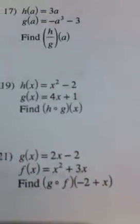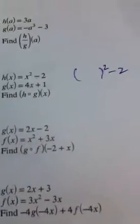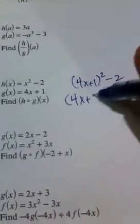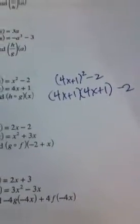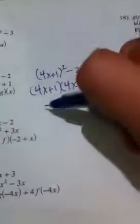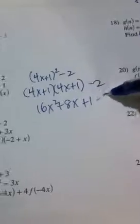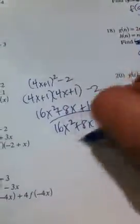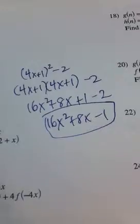The only other thing you might see is like number 19, H of G of X. My H function is X squared minus 2. So it's 4X plus 1 squared, the whole thing squared, quantity squared, which means you have to do FOIL. I'm going to cut this short because I'm running out of time. So your final answer for this one is 16X squared plus 8X minus 1. That was section 6.3.